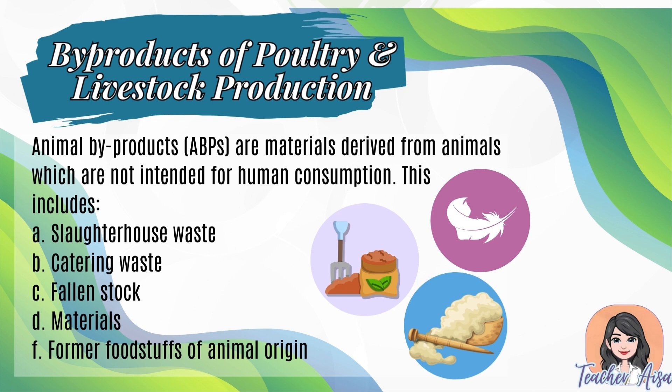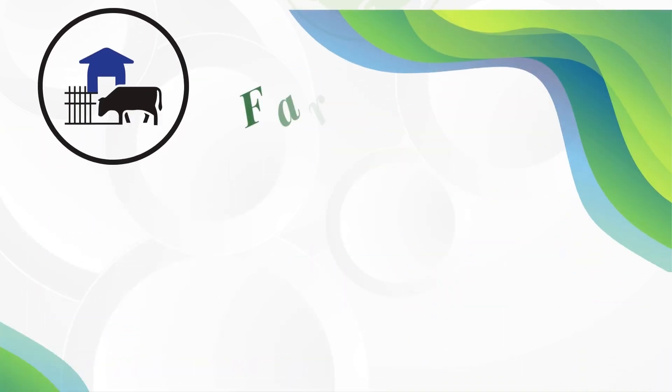d) Materials produced by animals such as manure, eggshells, feathers, wool, and fiber. f) Former foodstuffs of animal origin — products no longer suitable for human consumption, such as milk, eggs, and meat. ABPs provide benefits because some have high nutritional value and can be used to develop products such as fertilizer, feed, biofuels, and cosmetics.